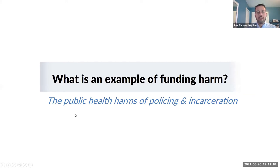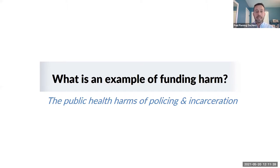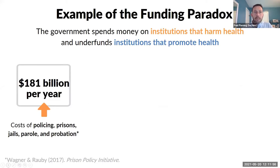I want to talk about an example of this paradox — an example of funding the harm. There are actually a lot of different examples we could use, such as subsidies for food and nutrition that cause dietary harms, or the way we subsidize polluters. But in today's talk, I'm going to zero in on policing and incarceration as a prime example of a way that our government spends a lot of money on things that we know, as health researchers, harms health. We spend $181 billion per year on policing, prisons, jails, parole, and probation.